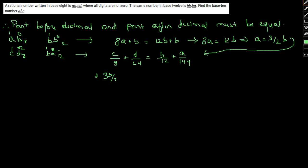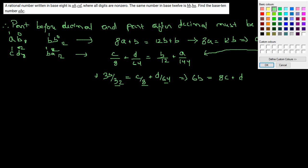3b by 32 equal to c by 8 plus d by 64. So the LCM of 32, 8 and 64 will be 64. If we multiply both sides by 64, it will simply give us 6b equal to 8c plus d. Now here one thing to be kept in mind is that...